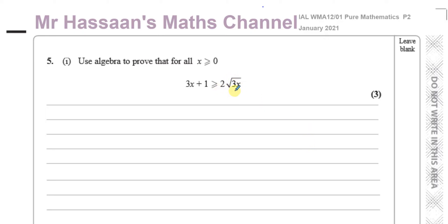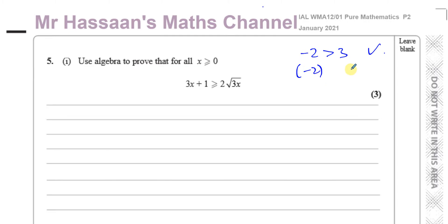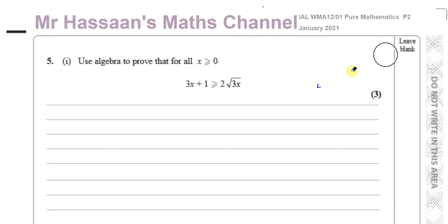The reason they're saying this is because we have an inequality with a square root, and to use some sort of proof we're going to have to square both sides to get rid of the square root. Squaring both sides of an inequality can be a problem. For example, if I say minus two is greater than three — that's true — but if I square both sides, I get four and nine, and the inequality is no longer true.